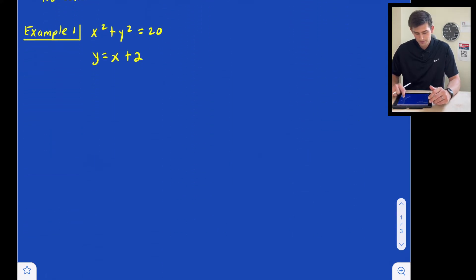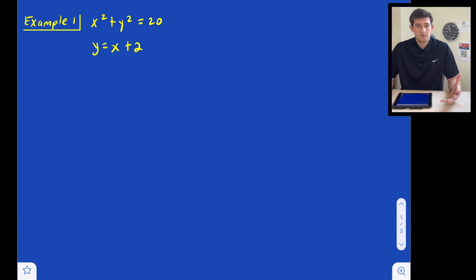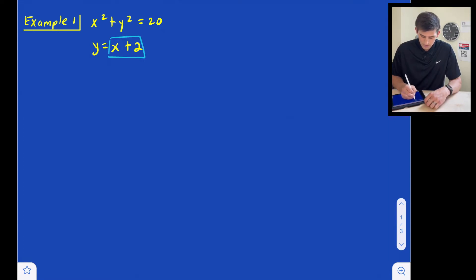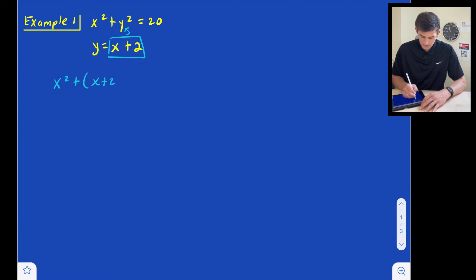We'll jump into example one with x squared plus y squared equals 20, and y equals x plus 2. The easiest method — remember when we solve a system we have three methods: graphing, substitution, and elimination. Substitution is probably the easiest method to use, and that's what we're going to do in this video. We see that y is equal to x plus 2, so we can plug that in for y into our circle equation. So we have x squared plus, in parentheses, x plus 2 squared, and that's equal to 20.